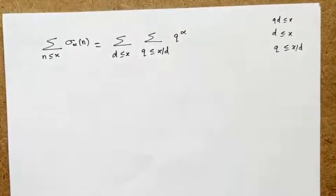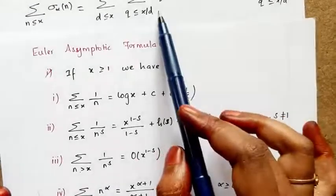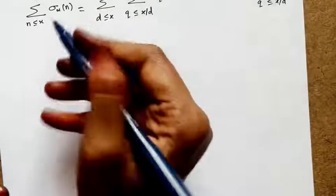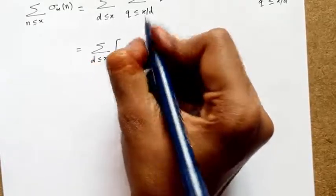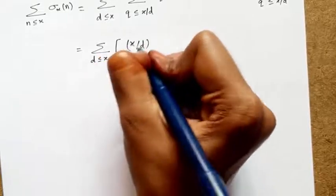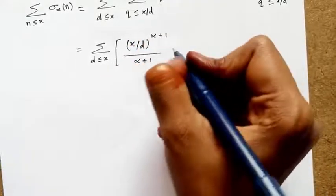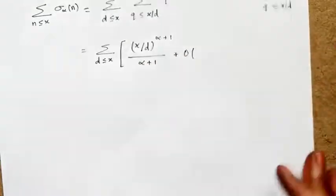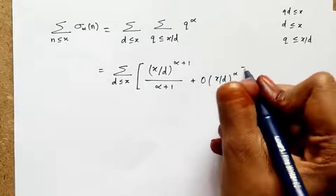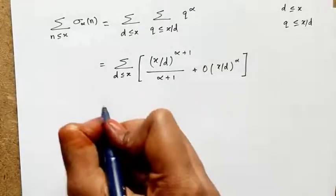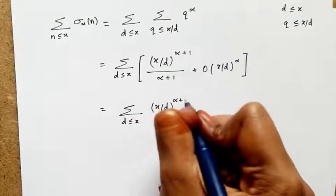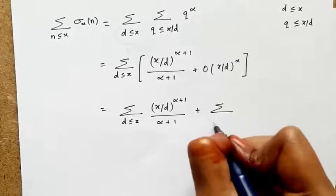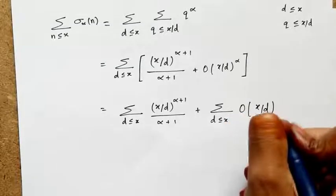Now I apply Euler's asymptotic formulae. For the inner sum over q ≤ x/d of q^α, I use the fourth formula, replacing x by x/d: this gives (x/d)^(α+1)/(α+1) + O((x/d)^α). So the full expression becomes: sum over d ≤ x of [(x/d)^(α+1)/(α+1) + O((x/d)^α)].